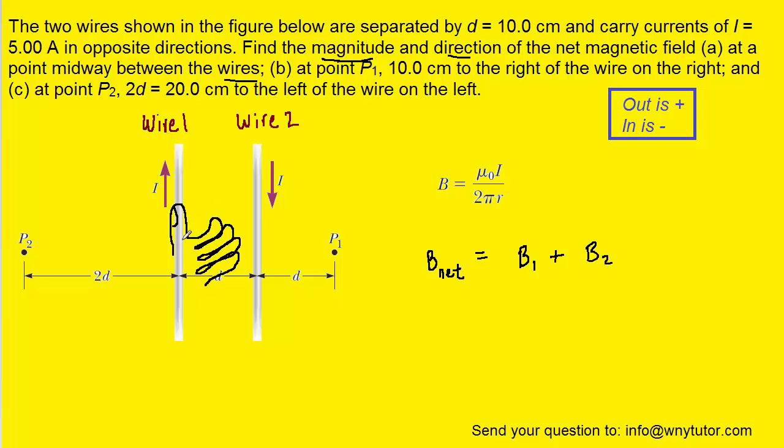When we grip wire 1, we would point our thumb upwards in the direction of the current, and we would see that our fingers curl in this direction, and once again, that would be directed into the page at a spot that's halfway between the wires. So, because the magnetic field produced by wire 1 is also into the page, it too will have a negative sign. So, once we understand that both of the magnetic fields are negative for part A, we can begin to plug into the equation.